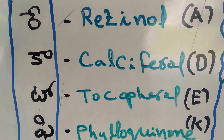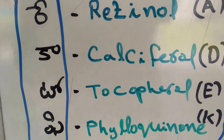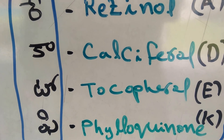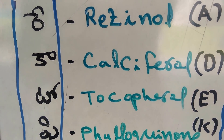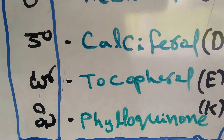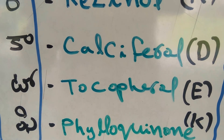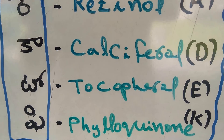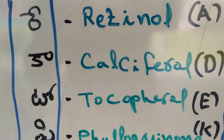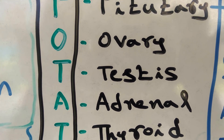Next is to remember fat-soluble vitamins with their chemical names. We all know A, D, E, K are the fat-soluble vitamins. To remember their chemical names, the code is 'Reka Topi' — Re for retinol (Vitamin A), Ca for calciferol (Vitamin D), To for tocopherol (Vitamin E), and Pi for phylloquinone (Vitamin K). So 'Reka Topi' is the code.